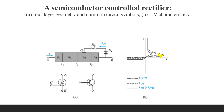Now we will visualize how the gate controls the current. Assuming the SCR is in the forward blocking state with a small saturation current flowing from anode to cathode, a positive gate current causes holes to flow from the gate into P2 — the base of the NPN transistor. So holes are injected into this base P2.